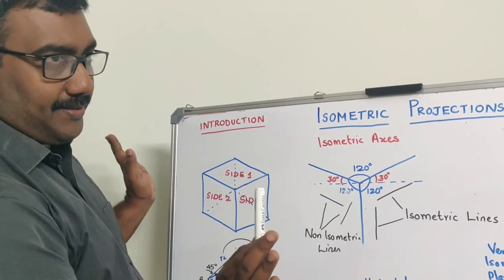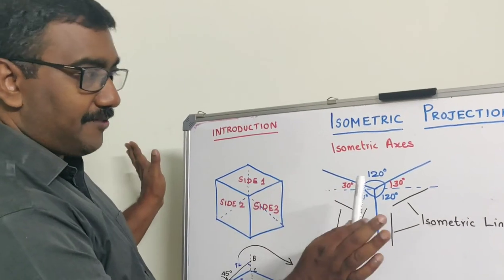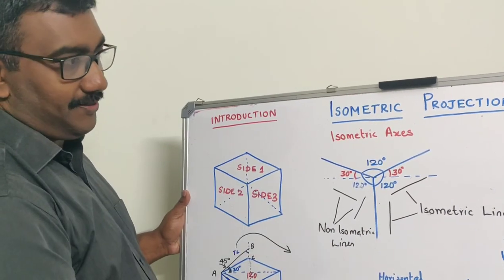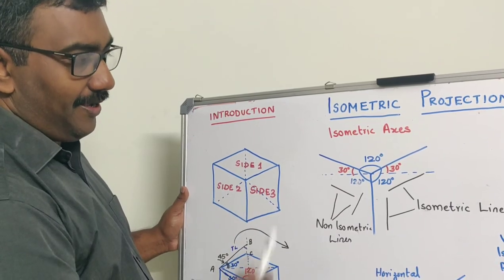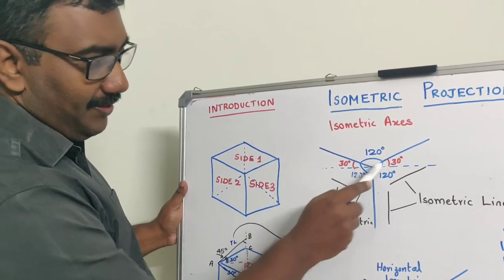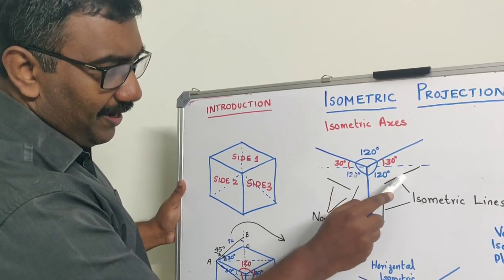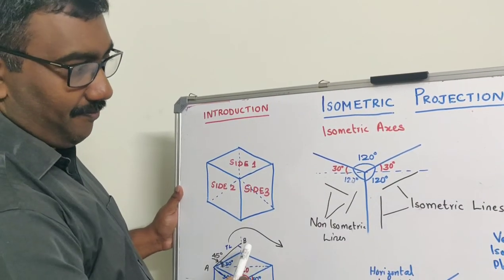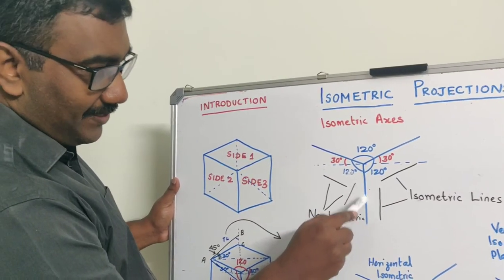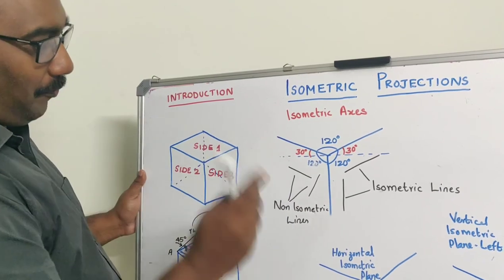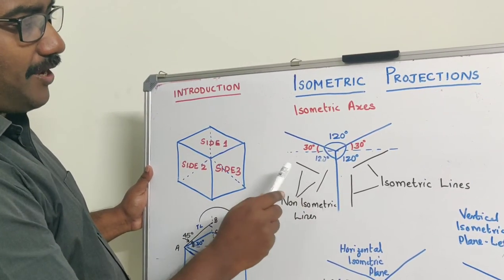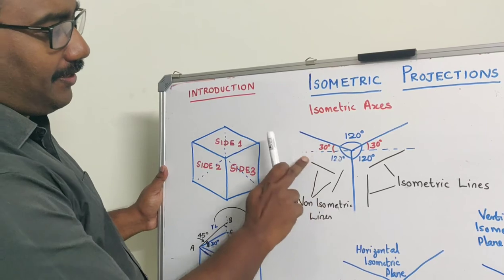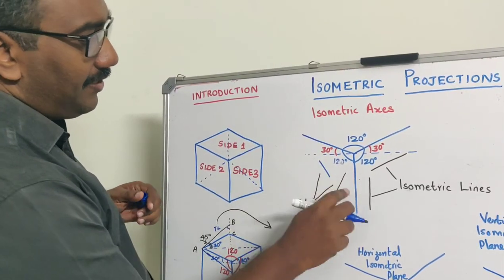These three are the isometric axes. There is no particular name or difference for each axis. But you are having isometric lines and non-isometric lines. An isometric line is any line which is parallel to an isometric axis. These two are isometric lines because this line is parallel to this axis and this line is parallel to that one. Non-isometric lines are lines which are not parallel to any of the isometric axes — these lines which are inclined are all non-isometric lines.